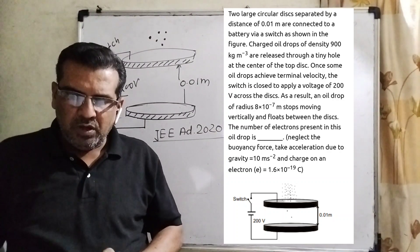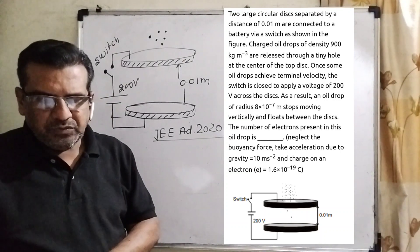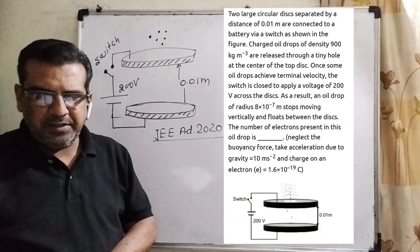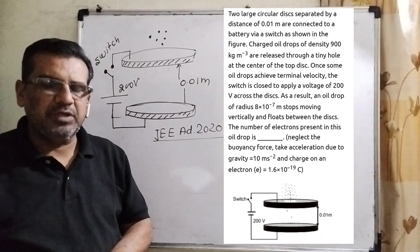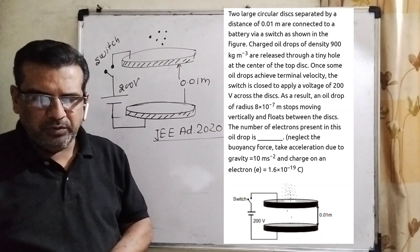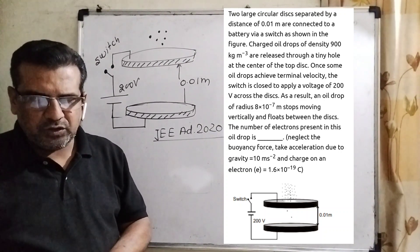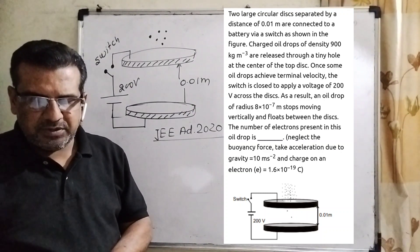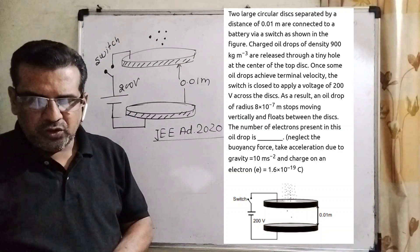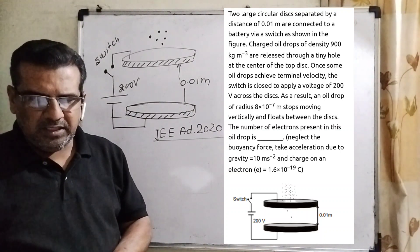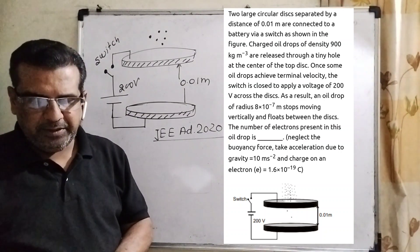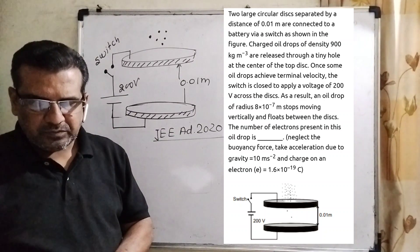Okay, let's move on. What does the question say? Here the question is: Two large circular discs separated by a distance of 0.01 meter are connected to a battery via a switch as shown in the figure. Charged oil drops of density 900 kg per meter cube are released through a tiny hole at the center of the top disc. Once some oil drops achieve terminal velocity, the switch is closed to apply a voltage of 200 volts across the disc. As a result, an oil drop of radius 8 into 10 raised to power minus 7 meter stops moving vertically and floats between the discs.